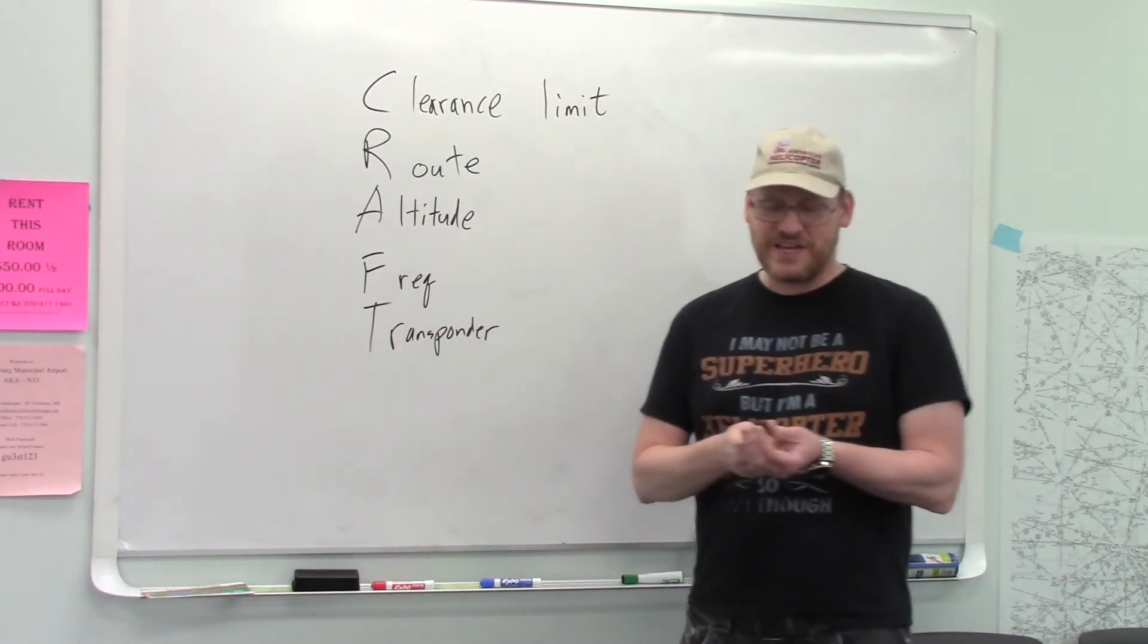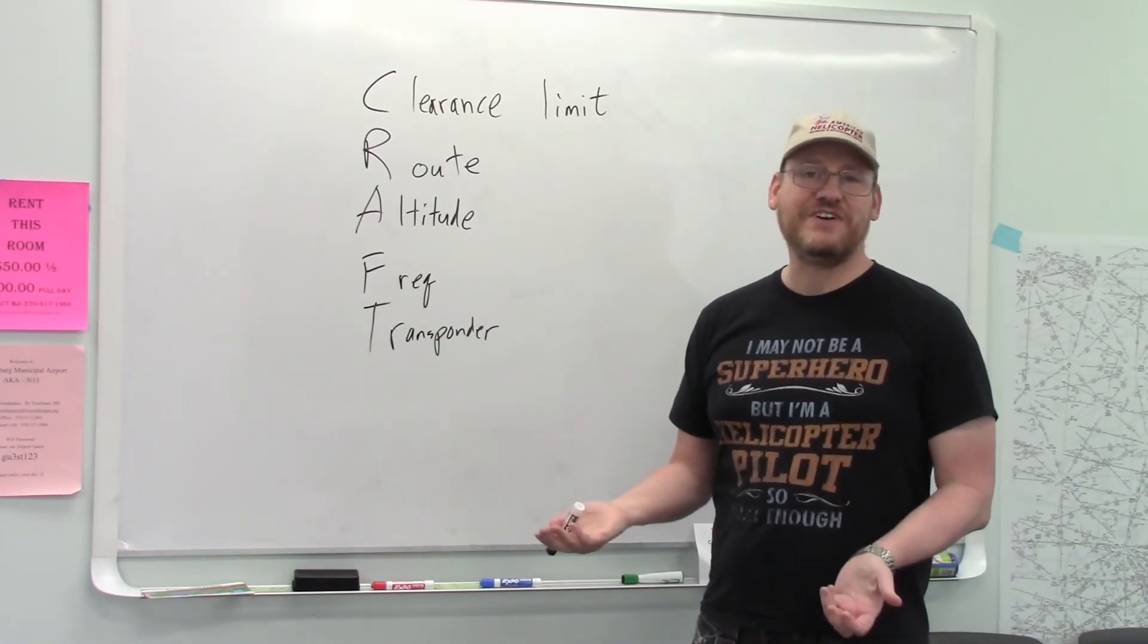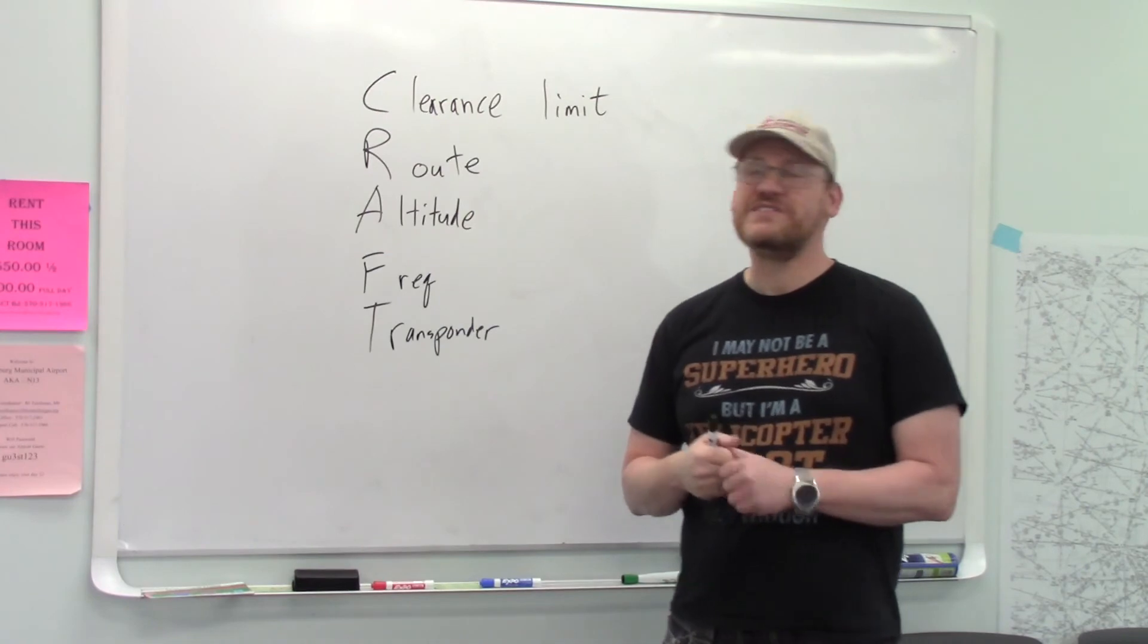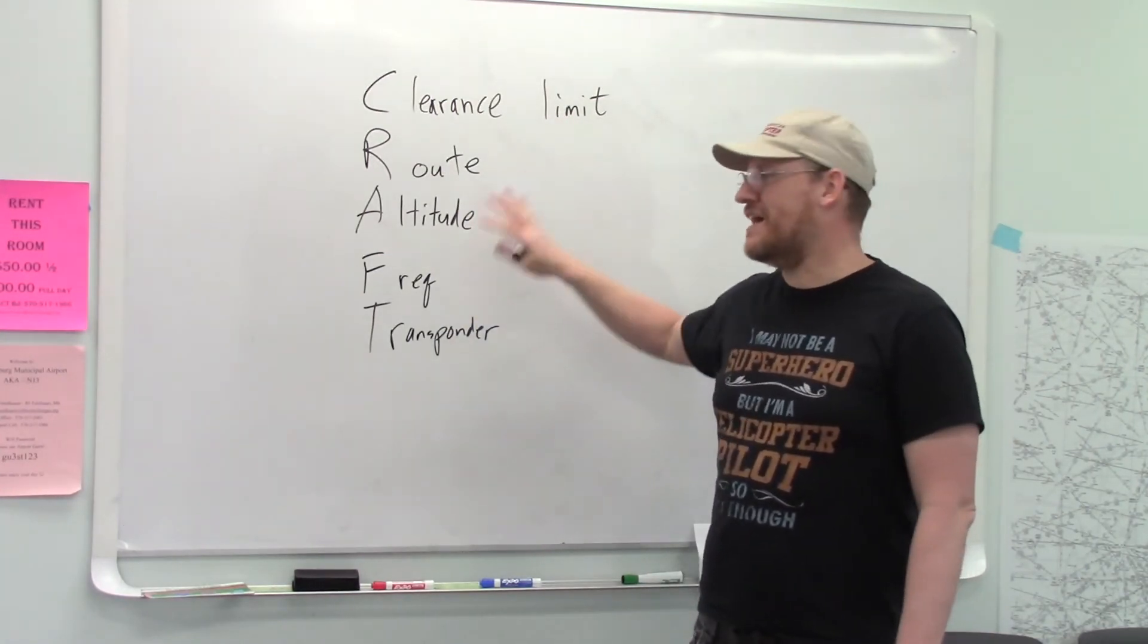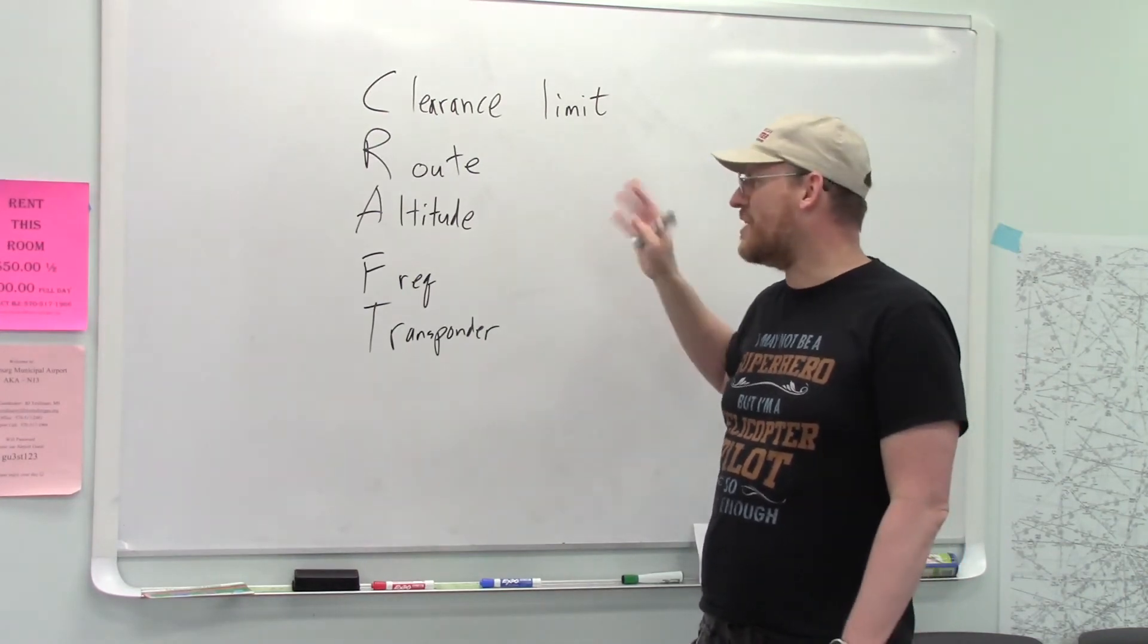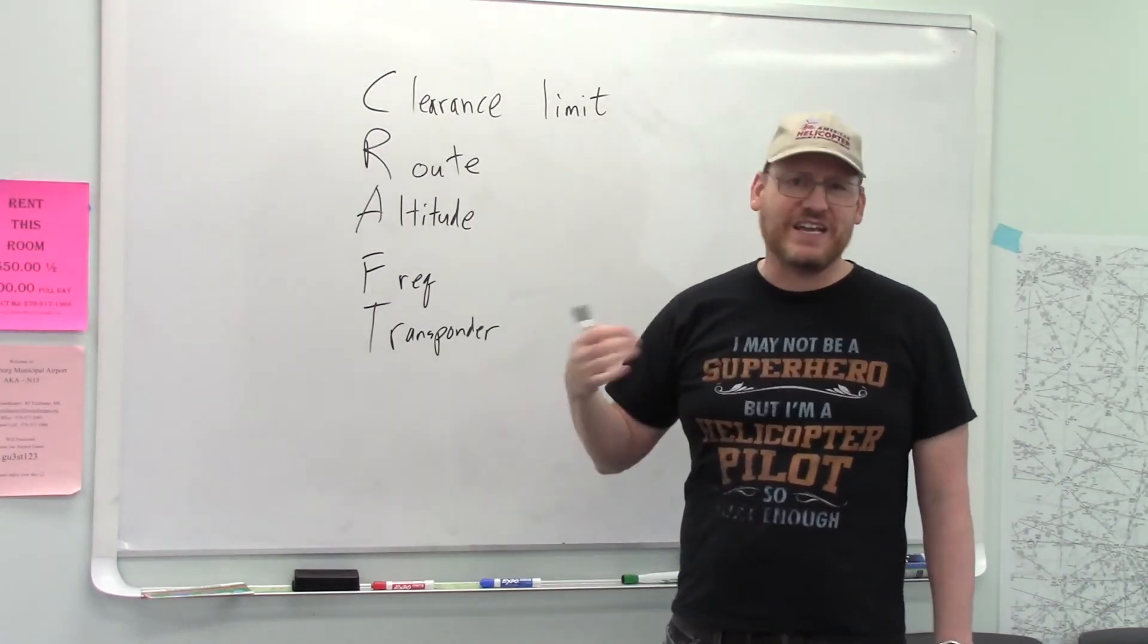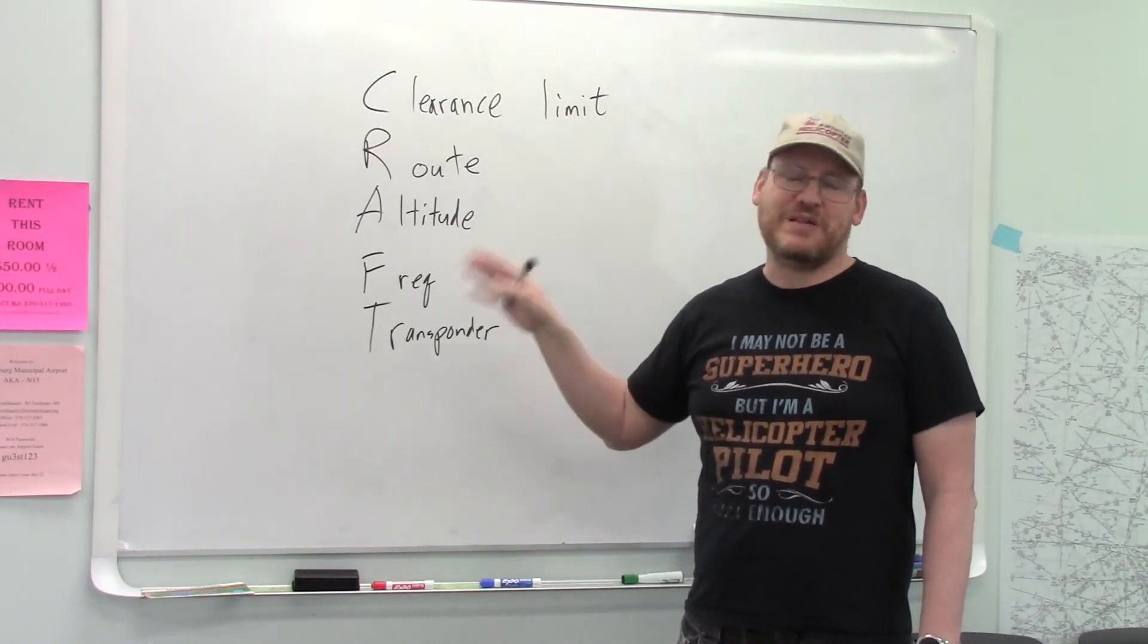You might have seen this already in your private pilot ground school, because even if you're flying VFR out of certain airports, they're going to give you a clearance that's very similar. It's not going to have all these fixes and things, but it'll probably be fly runway heading, maintain VFR at or below this altitude. That's the difference between IFR and VFR from a busy tower field.